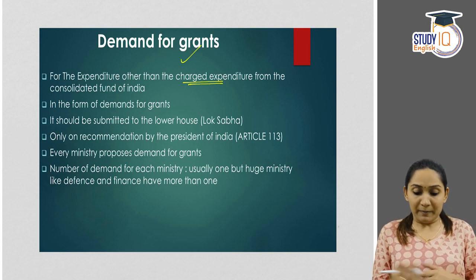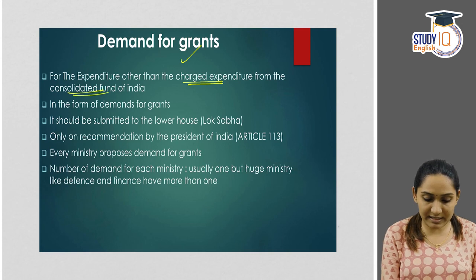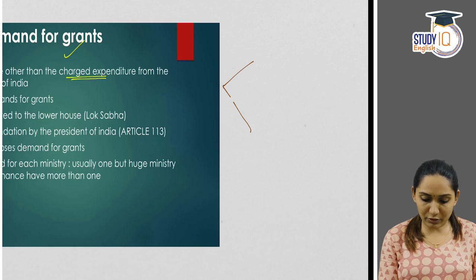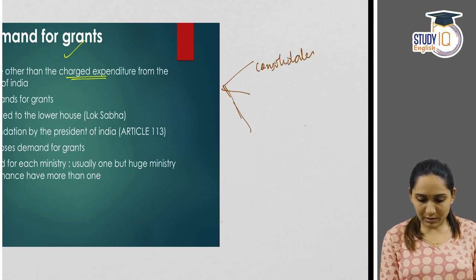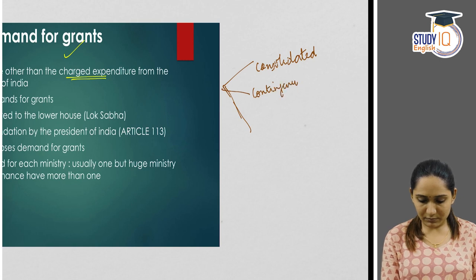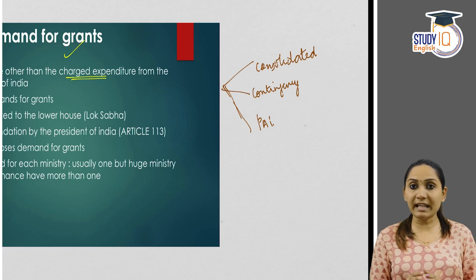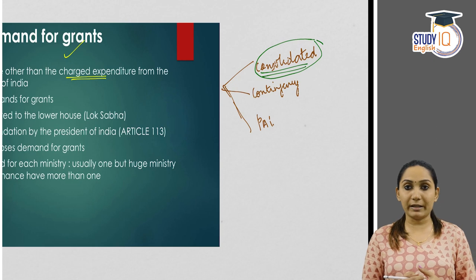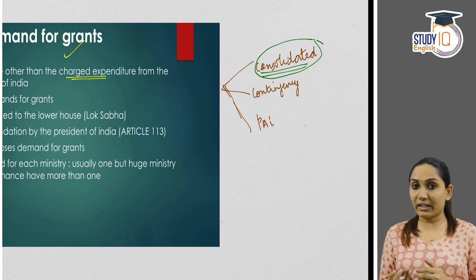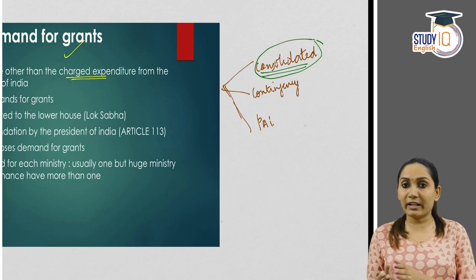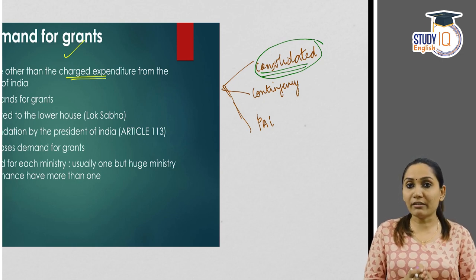What is the idea behind it? We know that there are three basic funds for India, for the government of India. They are the Consolidated Fund of India, Contingency Fund of India, and Public Accounts of India. The most important one is the Consolidated Fund of India. All the expenditures of the government are incurred from the Consolidated Fund of India, and all the revenue of the government goes into the Consolidated Fund of India.